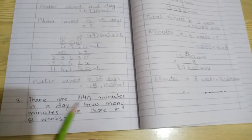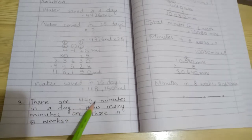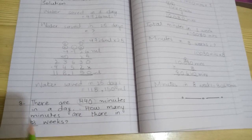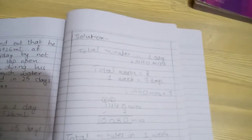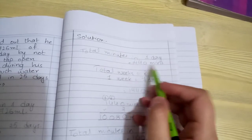Part number 3: There are 1,440 minutes in a day. How many minutes are there in 8 weeks? This is also very easy. Total minutes in one day: 1,440 minutes.